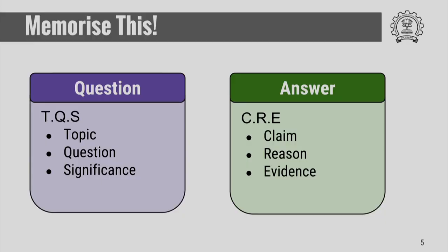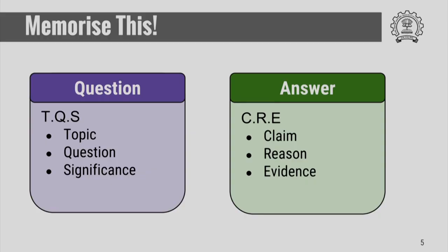You need to memorize this. The question has three important parts, and so does the answer. The question has TQS: the Topic, the Question, and its Significance. The answer has CRE: the Claim, Reason, and Evidence. When you summarize a paper this way, you will be able to come back to it and understand what has already been done. It is also important that when you practice writing others' papers this way, when you write your own work, you will be able to summarize your own work with a question and an answer.